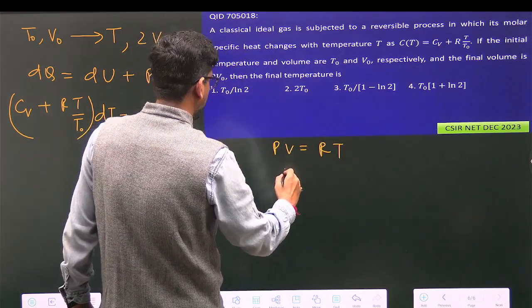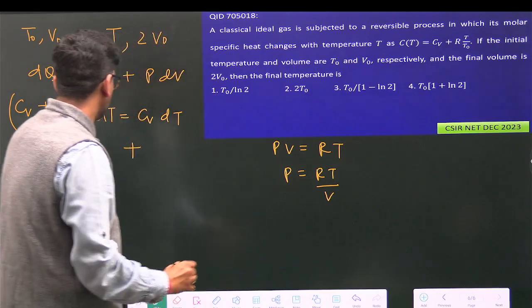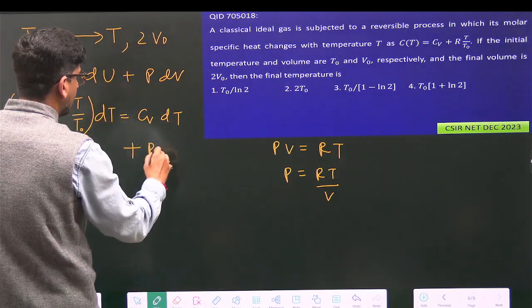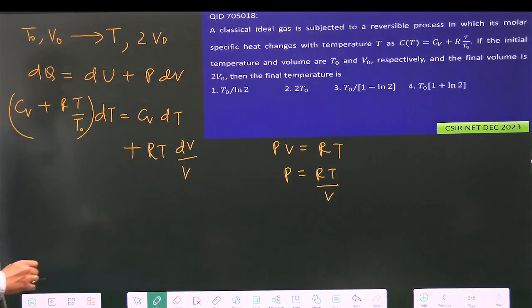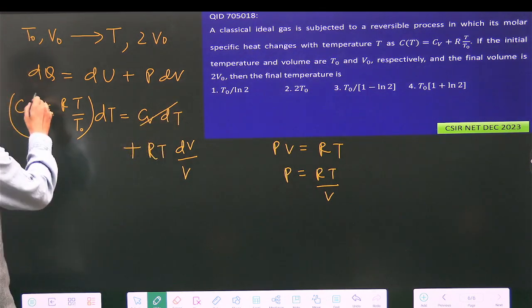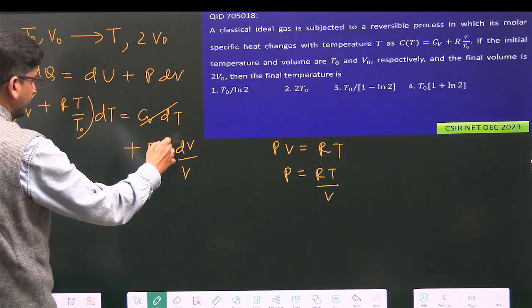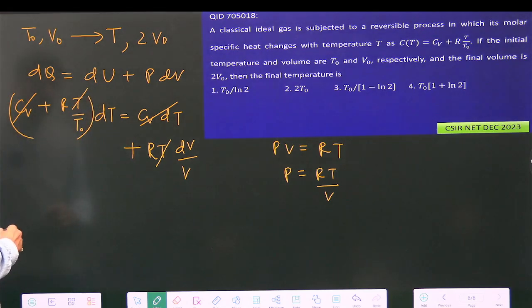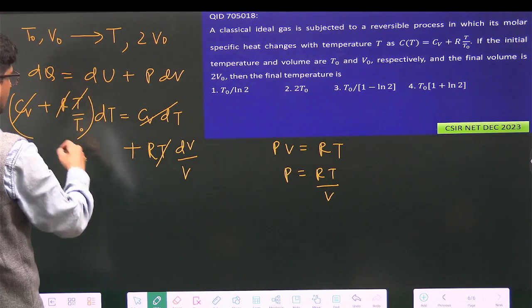So in this step, the Cv dT terms will cancel, and this T and this T will also cancel. R will also cancel. So you will have dT/T₀.